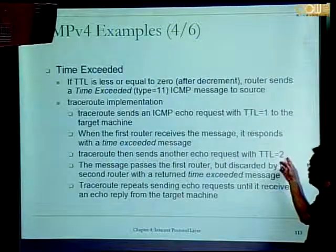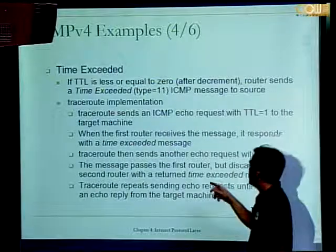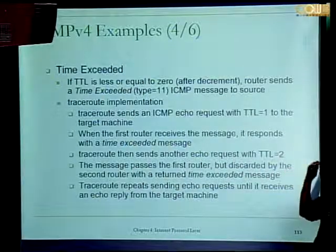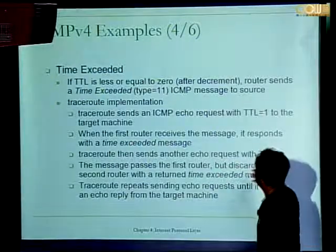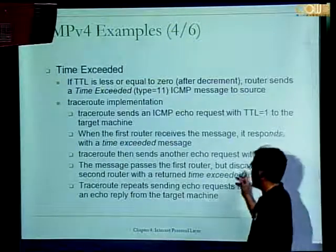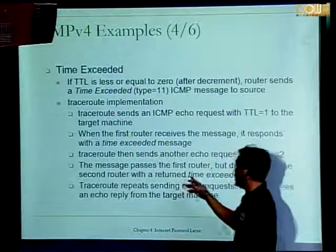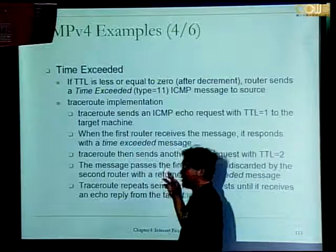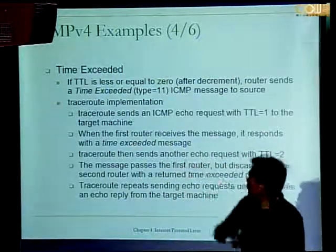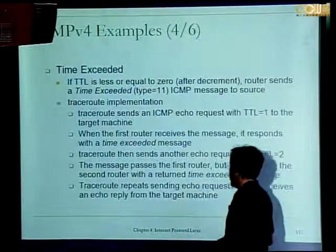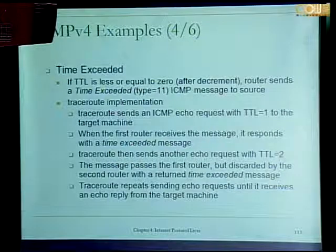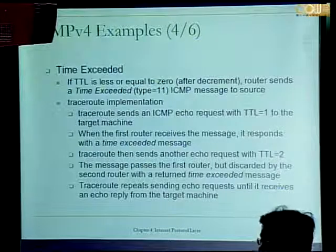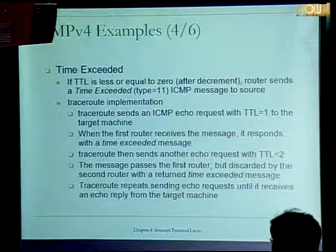This time traceroute sets TTL to two so the echo request passes the first router. The first router decrements TTL from two to one, and the second router decrements it from one to zero. The second router discards the packet and sends an ICMP time exceeded message to the source, so the source learns who the second router is. This process is repeated iteratively — TTL is set to three, then four — and in this way traceroute discovers the entire path: first router, second router, third router, revealing the complete route to the destination.